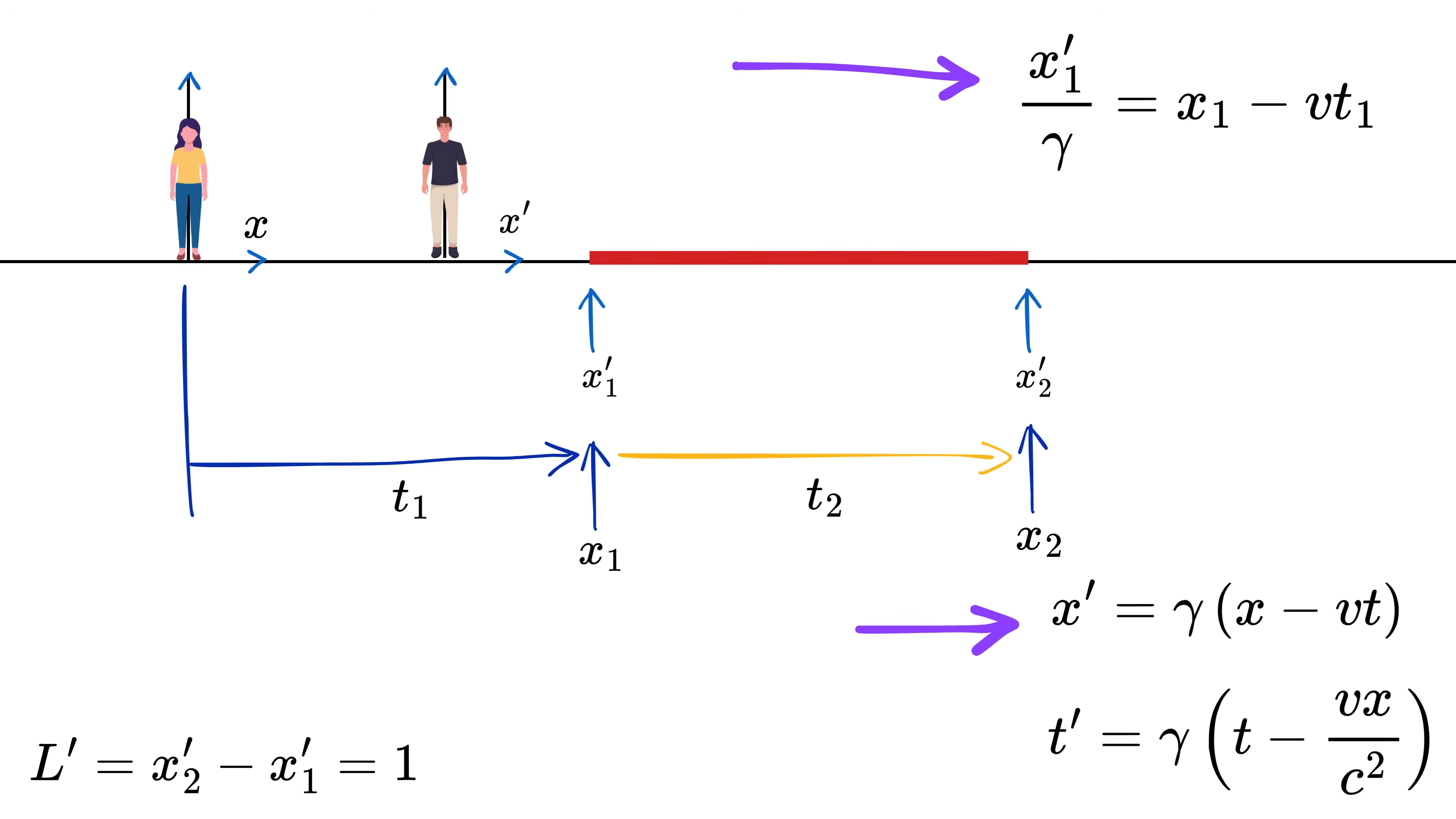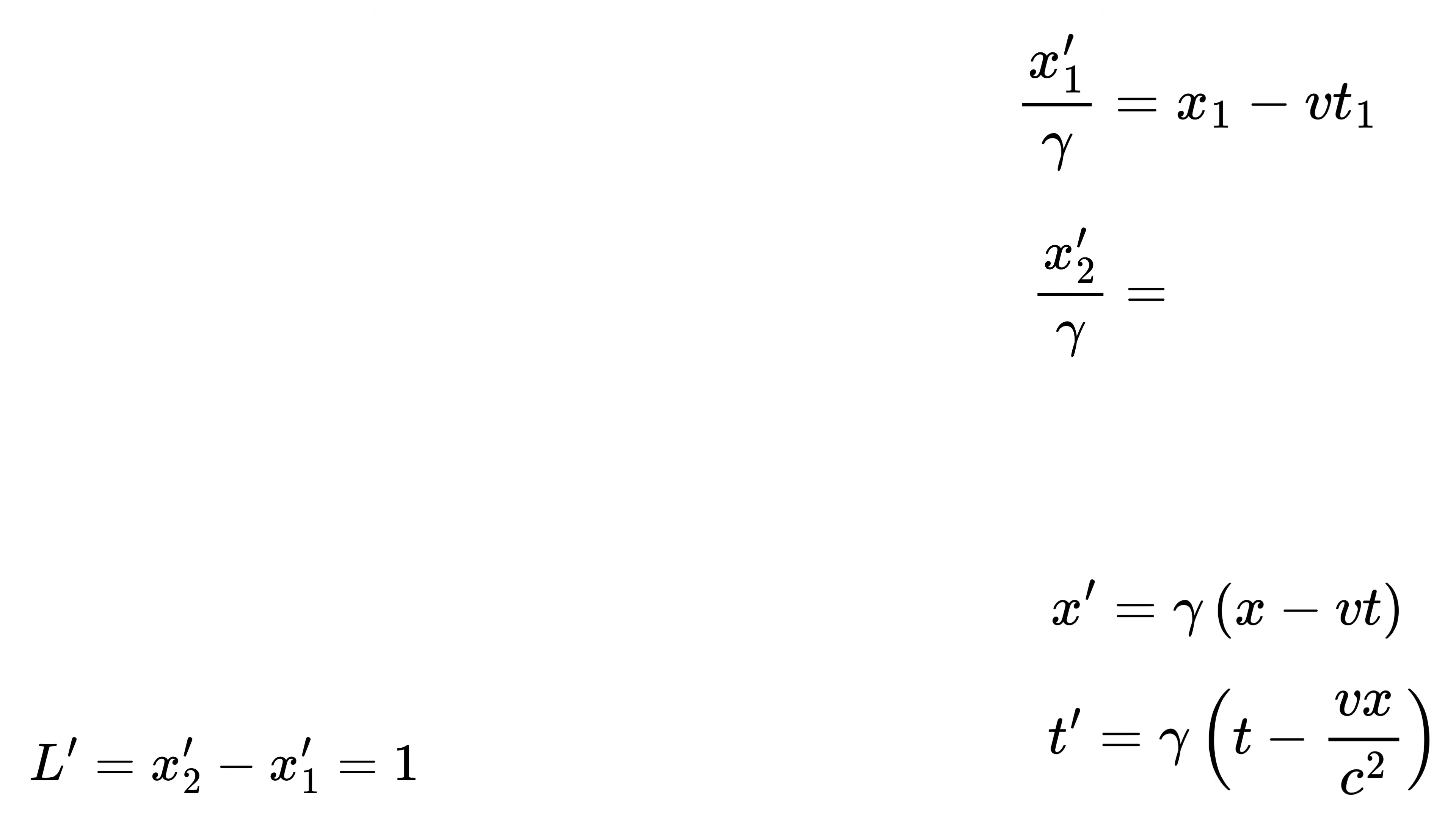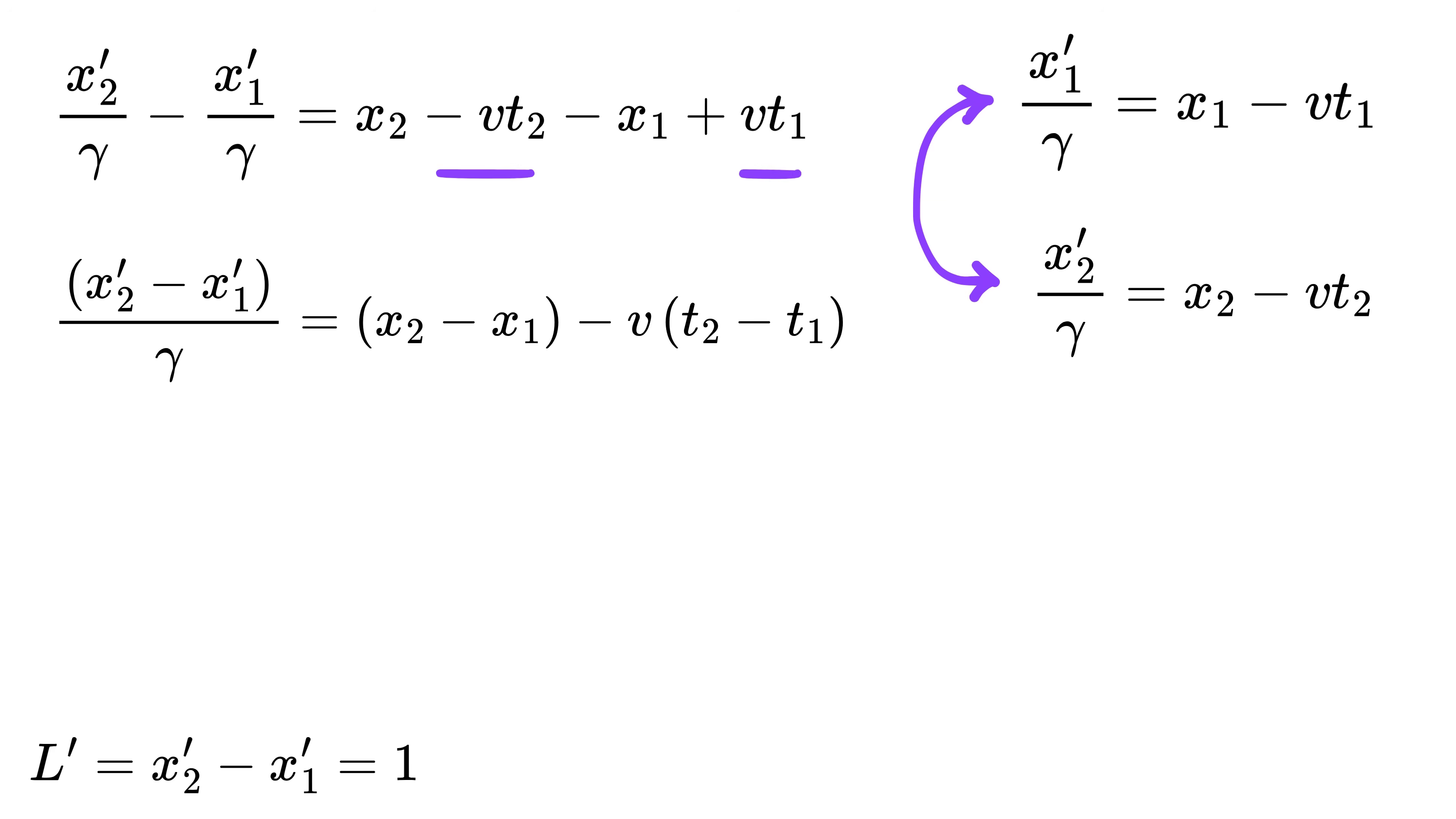So using this equation we get x1 prime as this in terms of x1 and t1. So x1 prime over gamma equals x1 minus v times t1, and x2 prime over gamma equals x2 minus v times t2. Subtract both of these equations to get this.